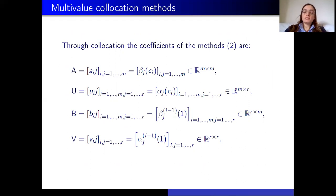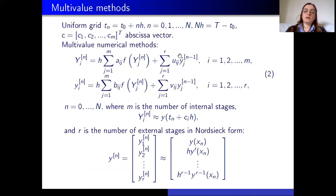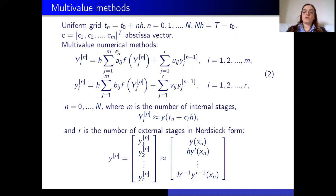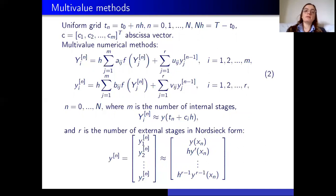We are particularly interested in the matrix A. In fact, if we look at the formulation of the method, the computational cost is strictly connected to the structure of matrix A. If A is a full matrix, the method is fully implicit, because it is necessary to solve a full nonlinear system. So we want to change the structure of matrix A in order to reduce the computational effort and not solve the whole full system, but perhaps a reduced one.